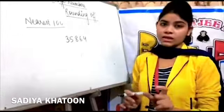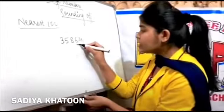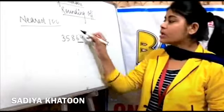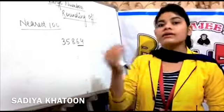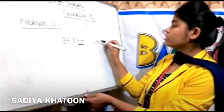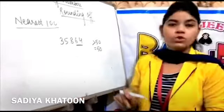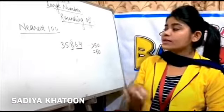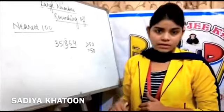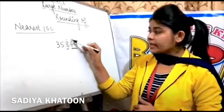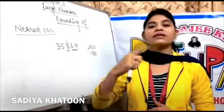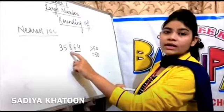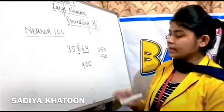For rounding off to nearest hundred, you check the last two digits of the given number. If the last two digits are 50 or greater than 50, you increase the hundreds place digit by one. The two digits you checked become zero. In the example 35,864: 64 is greater than 50, so increase the hundreds digit by one — 8 becomes 9 — and make the last two digits zero.